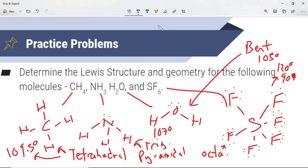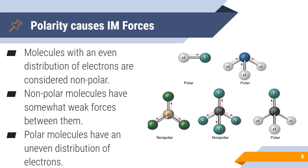When we talk about polarity, our primary focus is that some molecules have an even distribution of electrons and some have an uneven distribution. Molecules with an even distribution are considered nonpolar and have somewhat weak forces between them. Polar molecules have an uneven distribution. It all has to do with how you draw your dipole arrows, which tell us which atom in a bonded pair attracts the shared pair of electrons in a covalent bond the most.